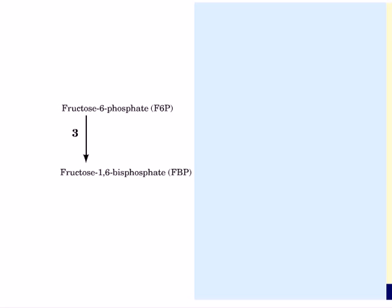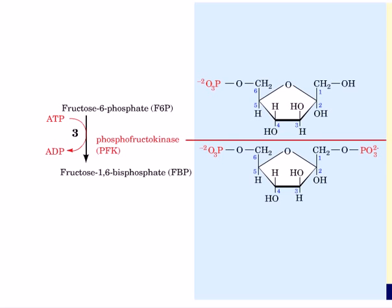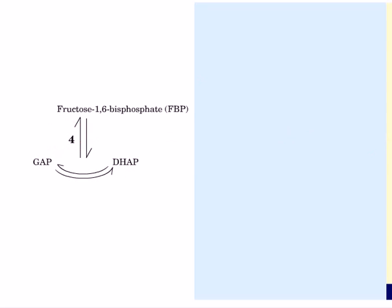The third reaction is the conversion of fructose 6-phosphate to fructose 1,6-bisphosphate. The reaction is catalyzed by phosphofructokinase, and as the name suggests it requires ATP as well as magnesium ion. The gamma phosphate of ATP is transferred to the C1 hydroxyl of fructose 6-phosphate, making it fructose 1,6-bisphosphate.